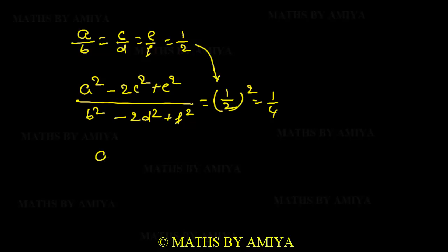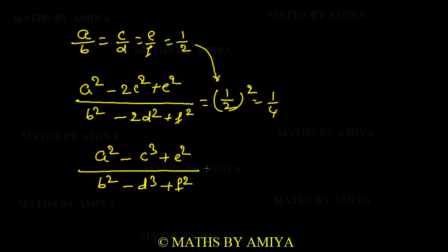For example, (a²-c³+e²)/(b²-d³+f²): the change is +1, +1, -1, -1, +1, +1 — same change. But the powers are square, cube, square, cube — different powers. So the answer cannot be determined.